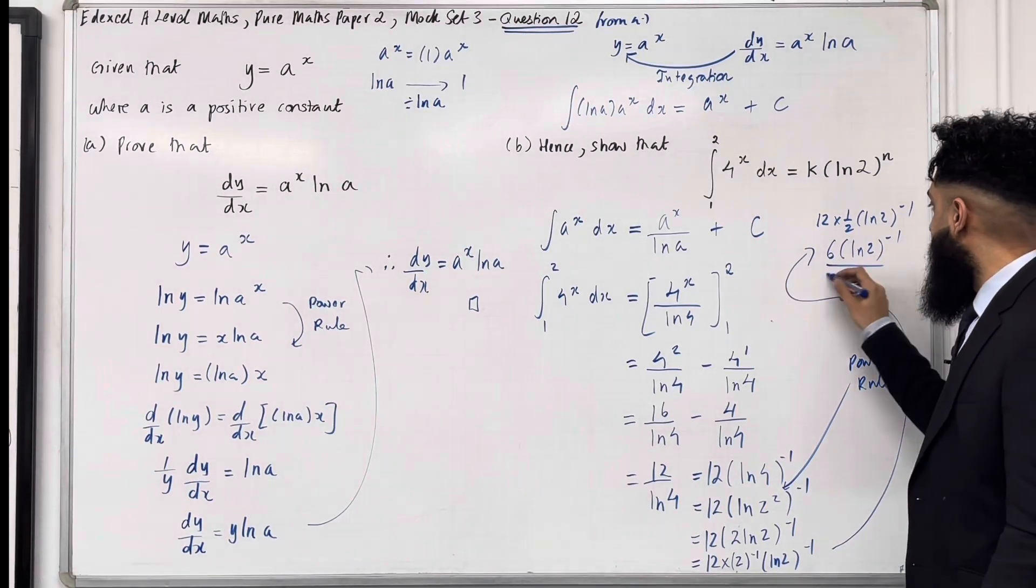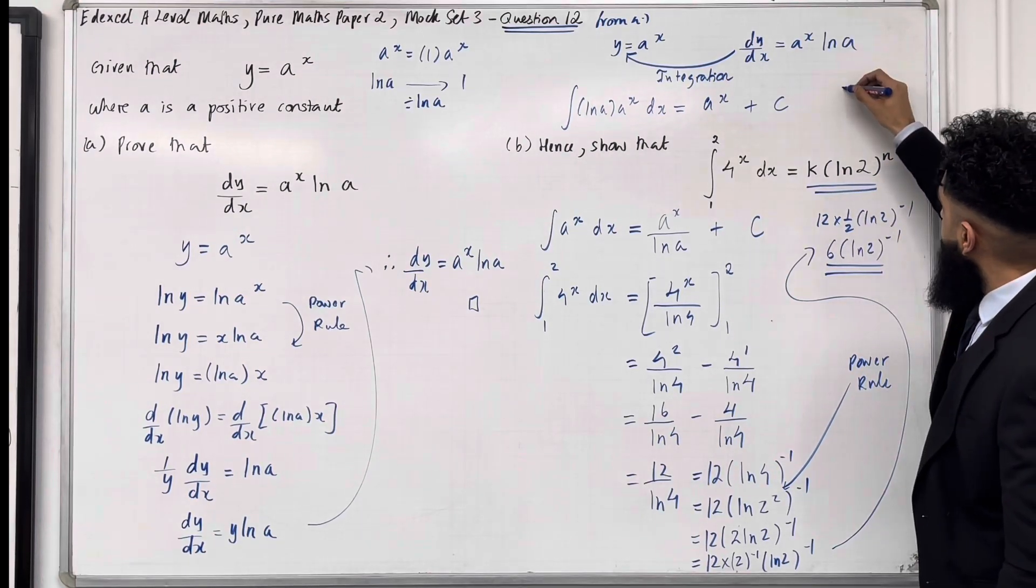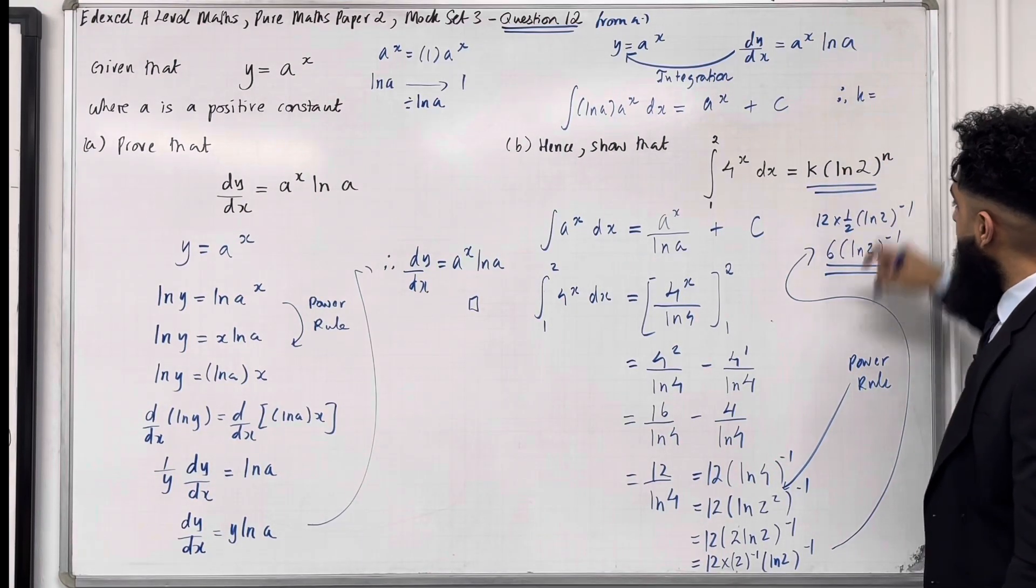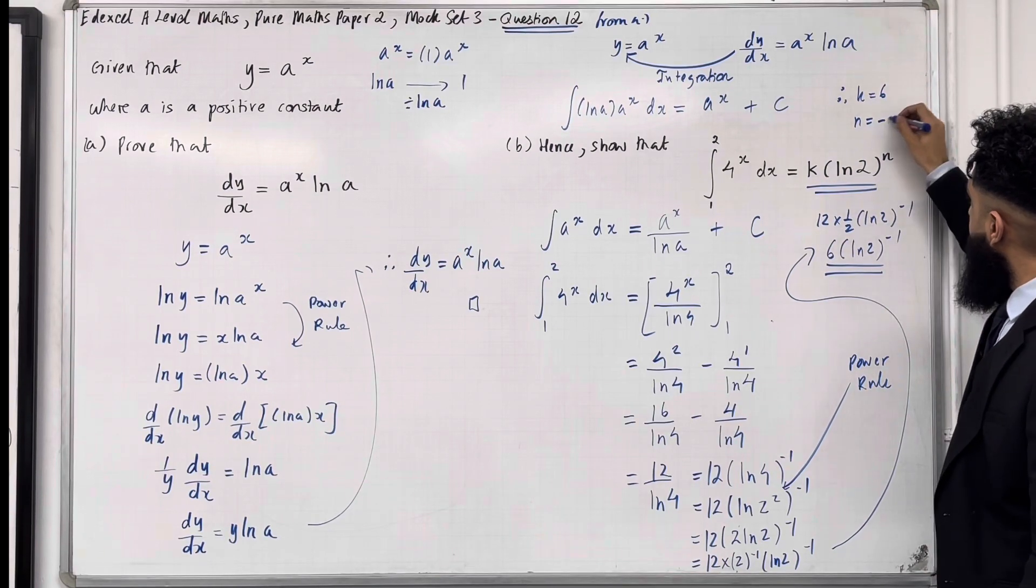And that is the desired form. It is this form over here. So therefore, the k is equal 6 and the n is equal minus 1.